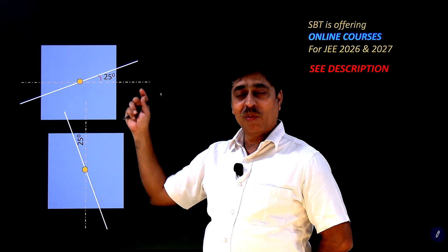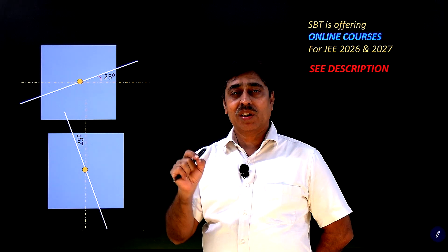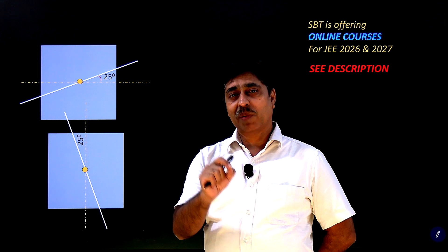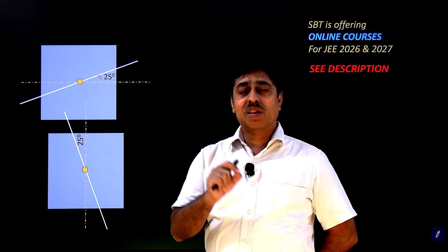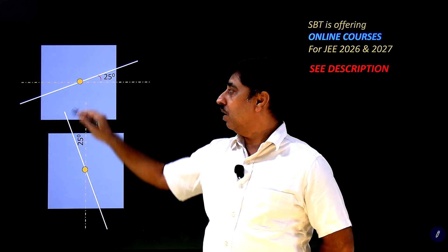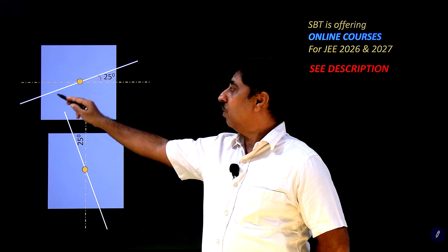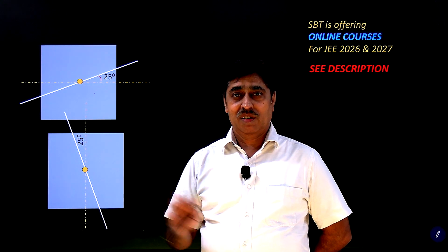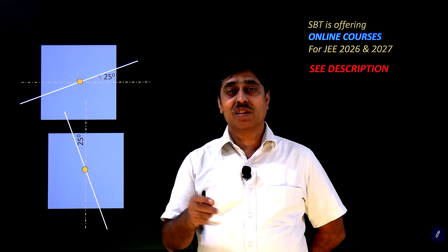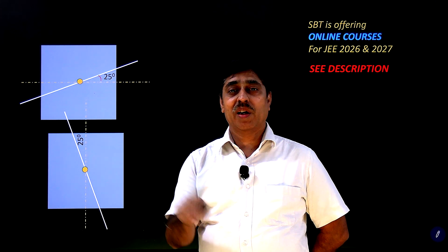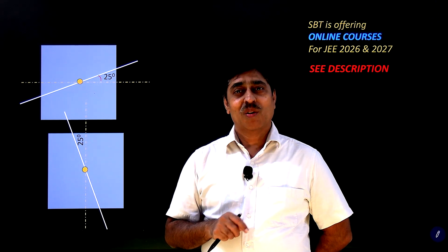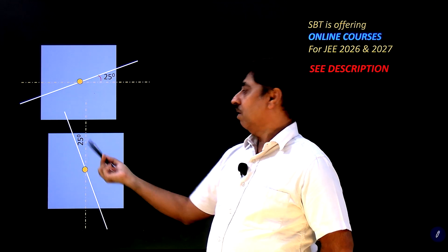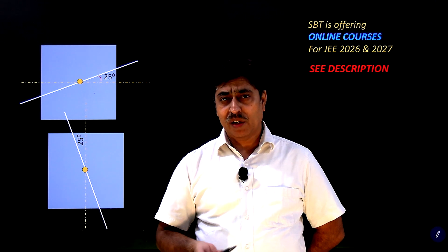Because when you have rotated it, you have not changed the position of any particle with respect to the axis. The distance of any particle on this square plate with respect to this axis has not been changed. It is a simple rotation in which the axis as well as the plate — everything was rotated. So obviously, the moment of inertia about this line, if it was I, it is still I. It is the same line.